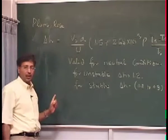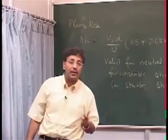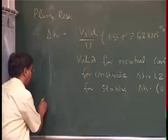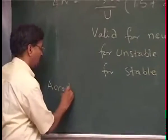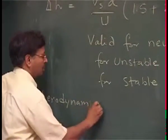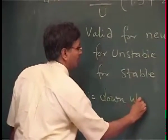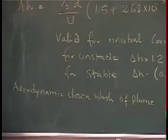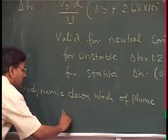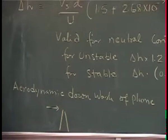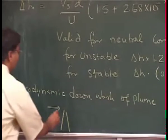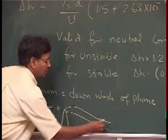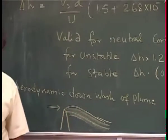There is one situation that we call as aerodynamic downwash of the plume. We will quickly define that one here, because it is a very simple thing. What happens is when you have a chimney or stack — and this you have all noticed yourself — when wind is very high, the plume instead of rising, you will see it just going down. You must have seen this from the brick kilns.